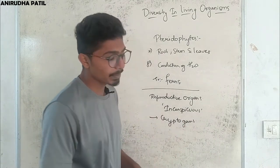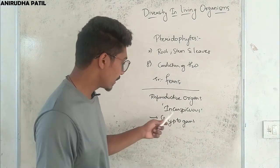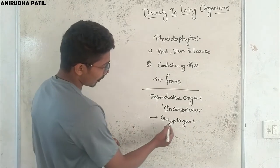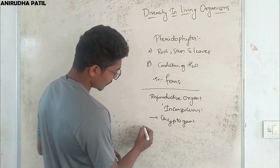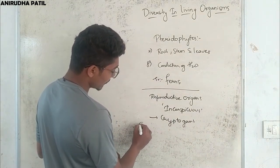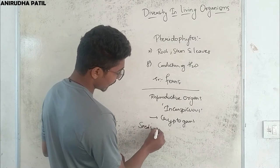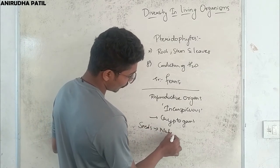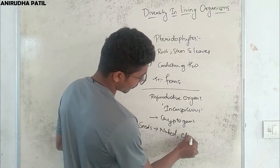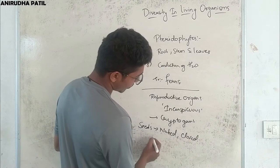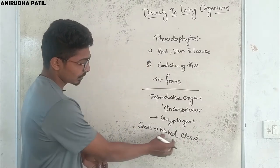In pteridophytes, thallophytes, and bryophytes, the reproductive organs are inconspicuous and hidden, which is why they are known as cryptogams. Further, classification is divided based on seeds — whether seeds are naked or enclosed. This gives us gymnosperms and angiosperms.